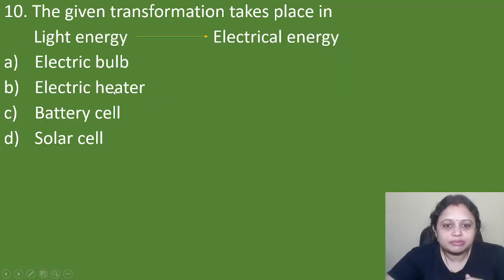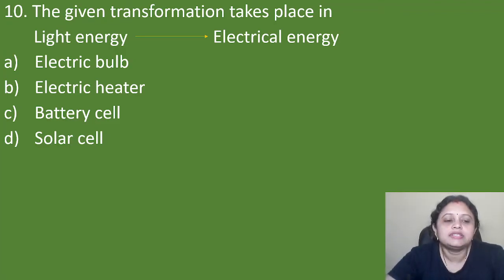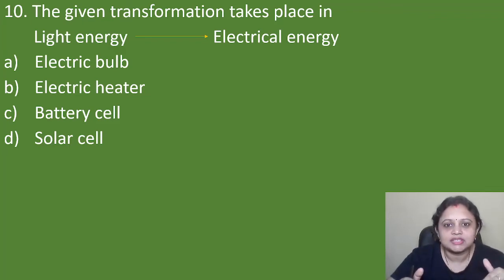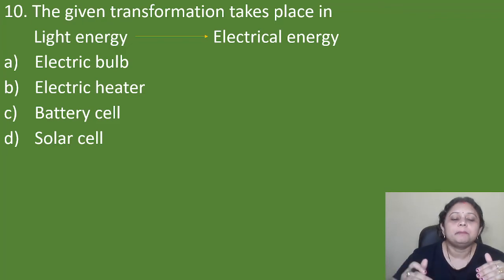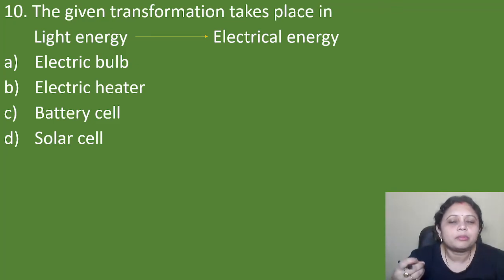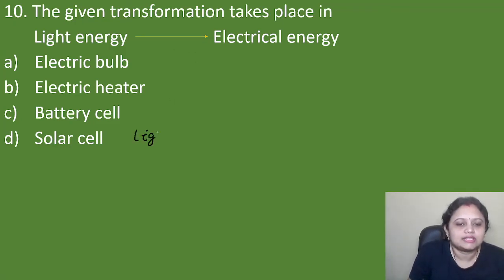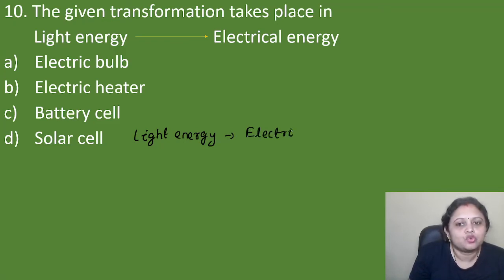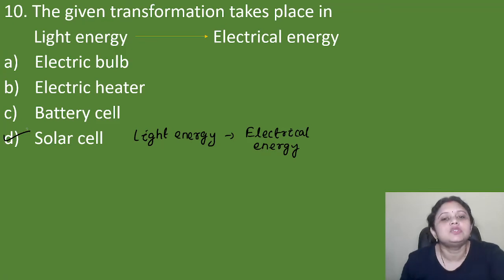Next question: the given transformation — light energy to electrical energy — takes place in which device? Option A: electric bulb, B: electric heater, C: battery cell, D: solar cell. The solar cell gets energy from the sun — that is light energy — and converts it to electrical energy. So the correct answer is option D, the solar cell.